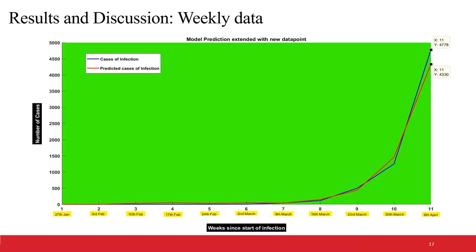To validate the working of the model, prediction of a known number of cases is done using data till 30th March. The prediction for 6th April, shown by the red line in the graph, is 4,330. The actual number of cases reported on 6th April is 5,778, which is very close.